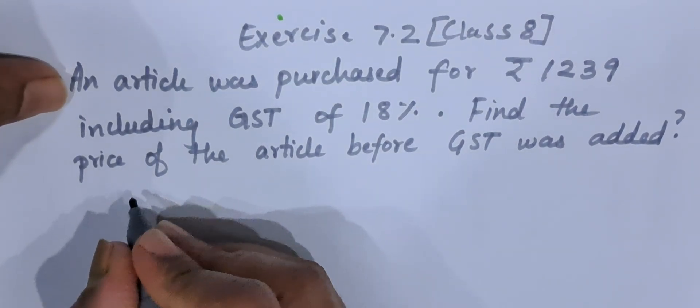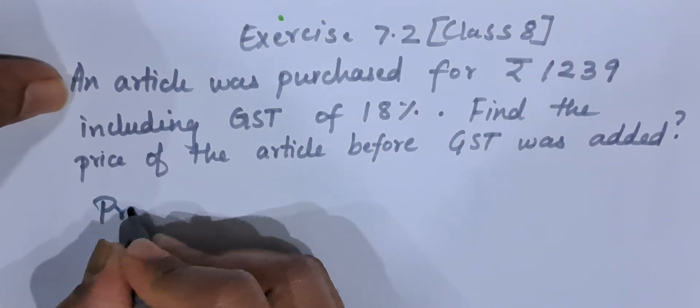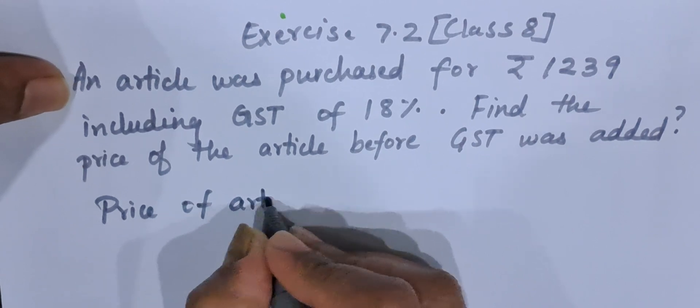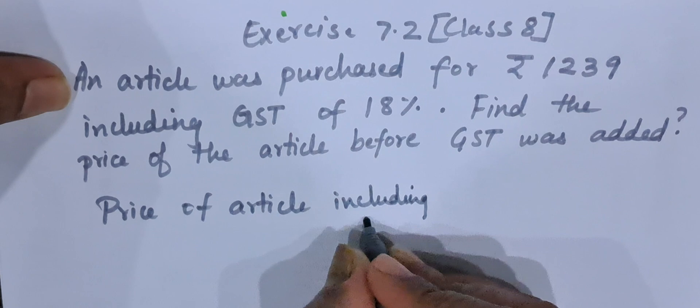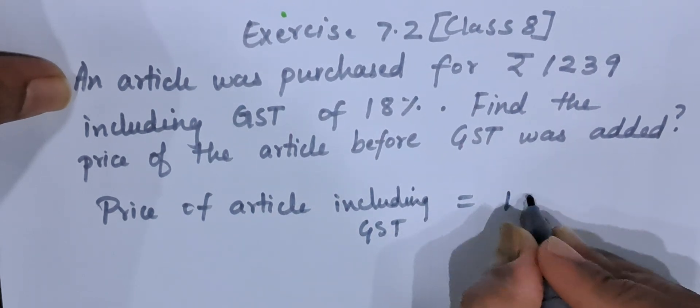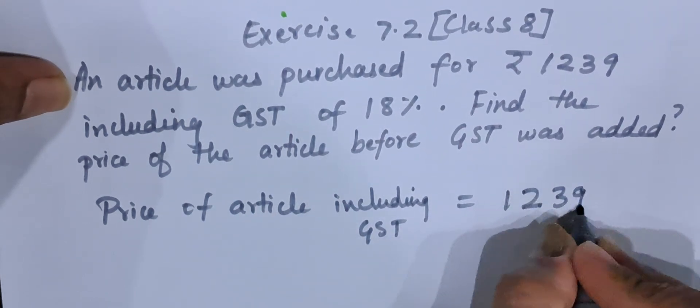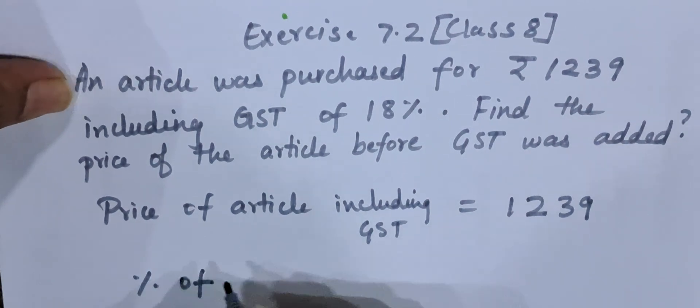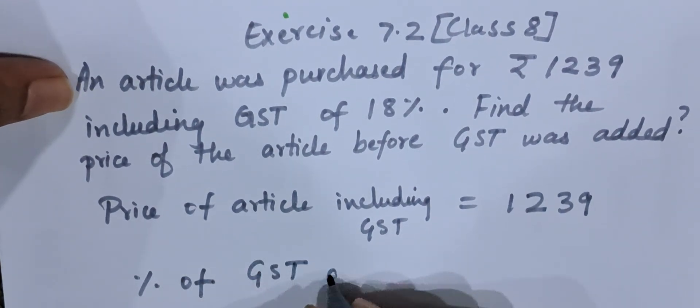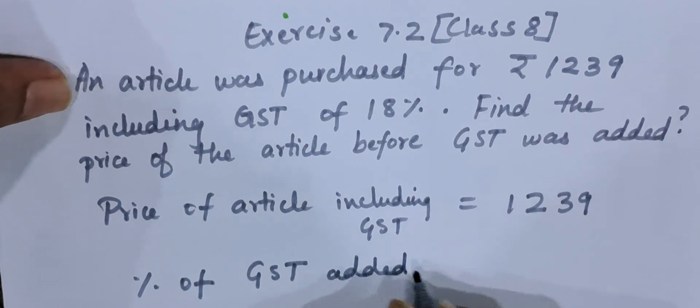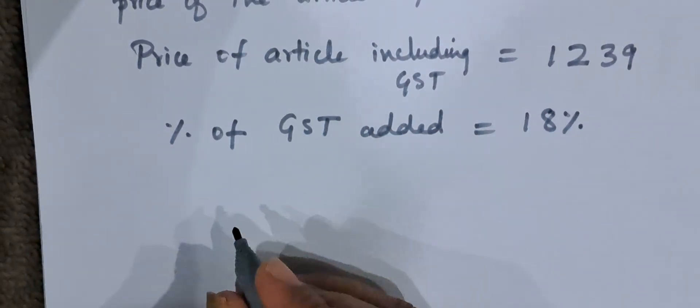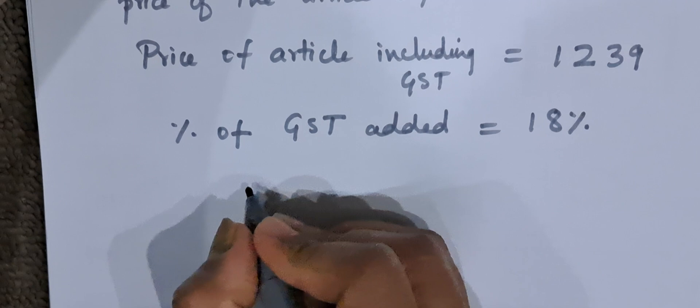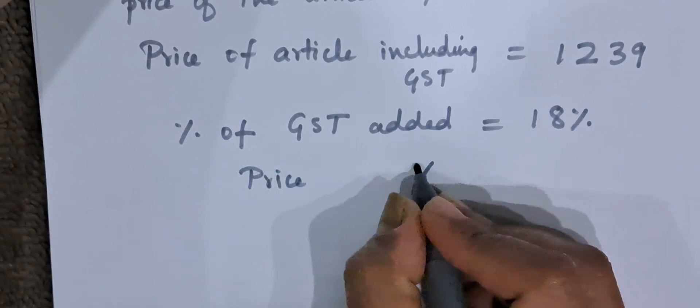Now let us write down price of article including GST. What is the price? 1239. Percentage of GST added - how much percentage of GST was included? 18%. Now we will do simple cross multiplication. First we will write price and then we will write percentage.